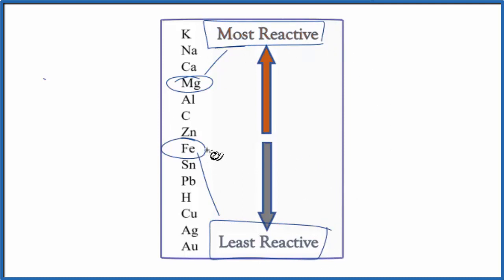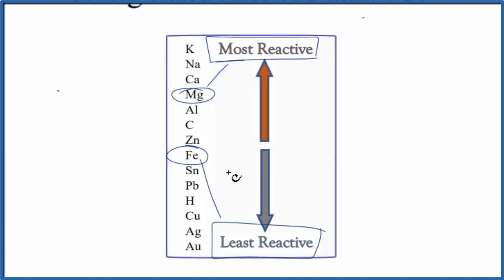So according to the activity series, magnesium is a more reactive metal than iron. And that's what we saw on the periodic table.